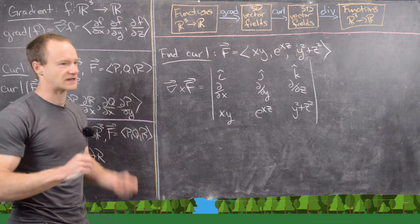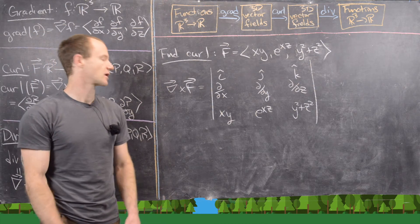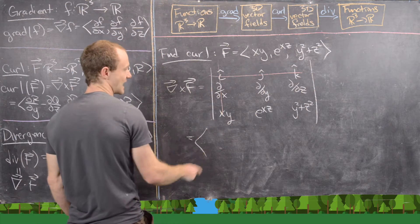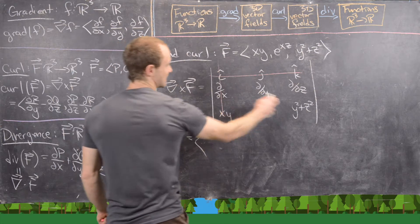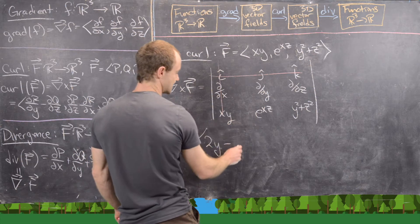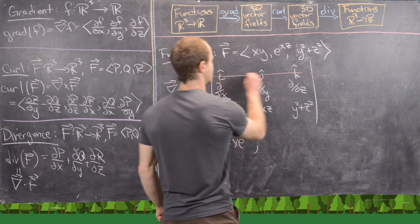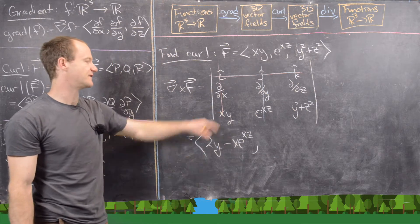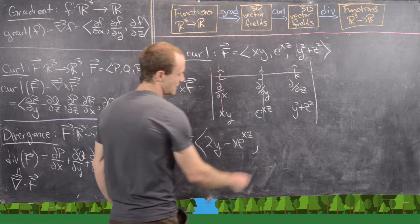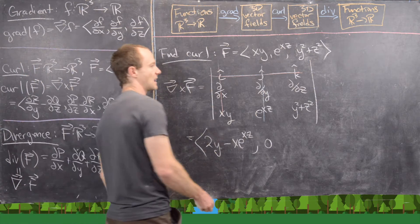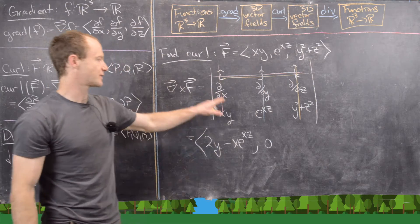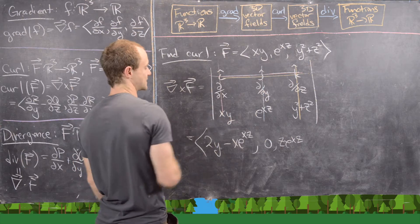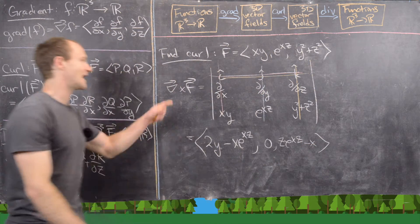This is really just a tool — it isn't literally a matrix, so don't think too hard about it. The first component is the partial with respect to y of (y² + z²) minus the partial with respect to z of e^{xz}, which gives 2y − x·e^{xz}. The second component involves partial with respect to x of (y² + z²) which is zero, minus partial with respect to z of xy which is also zero, so the second component is zero. The third component is the partial with respect to x of e^{xz}, which is z·e^{xz}, minus the partial with respect to y of xy, which is x. So the curl is (2y − x·e^{xz}, 0, z·e^{xz} − x).